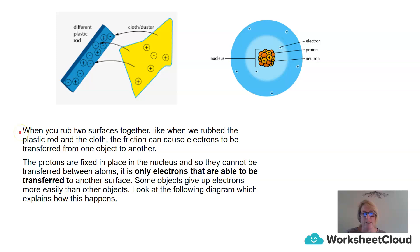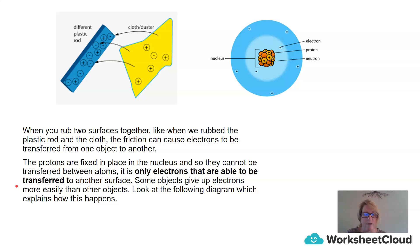When we rub two surfaces together, like the plastic rod and the cloth, friction causes electrons to be transferred from one object to another. The protons are fixed in place in the nucleus, so they cannot be transferred between atoms. It is only electrons that are able to be transferred to another surface. Some objects give up electrons more easily than other objects.